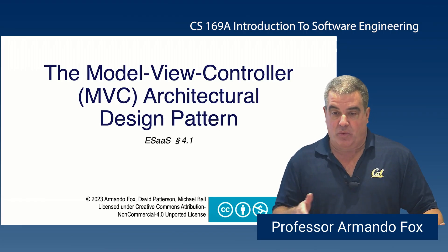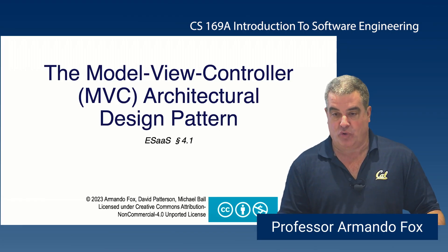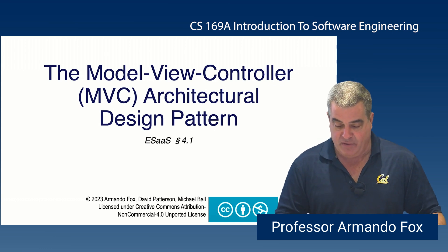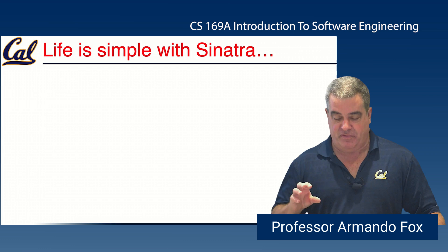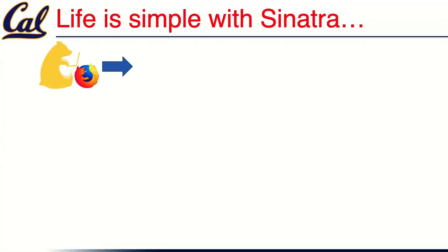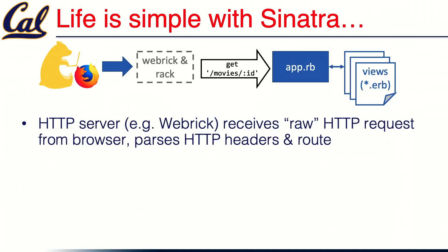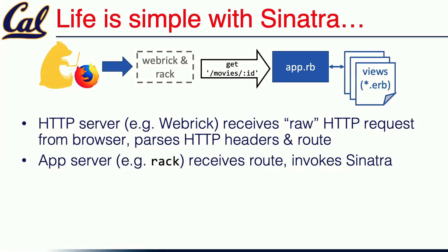One of the patterns we're going to look at next is called Model View Controller. To motivate why this is important, let's start by looking back at Sinatra, where life is very simple when you're doing a web app. There is a user sitting at a browser, the browser issues a request, some URI is the result of that request, and there's an HTTP server that receives that raw request. It parses the HTTP headers and the route, and passes that on to the app server, which invokes Sinatra.